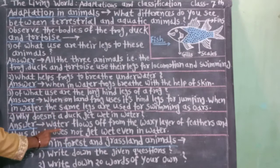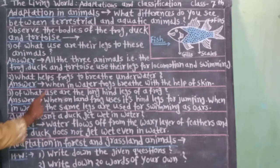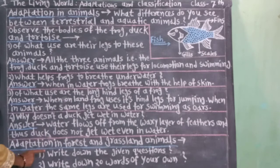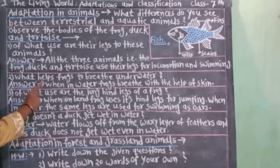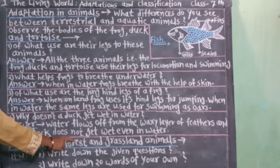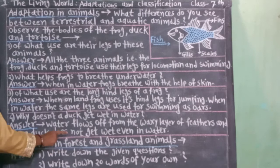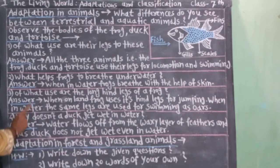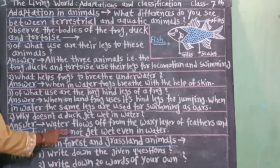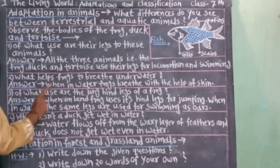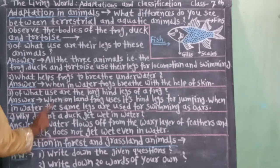Next, herbivorous animals like deer and black buck have colors that merge with their surroundings. Their teeth are strong for chewing tough plant material. Harin, kalvit yancha ranga parisarashi birta jurada asto. Vanaspatinchi khode chawun khanya sati tiyanna majboot da astat.